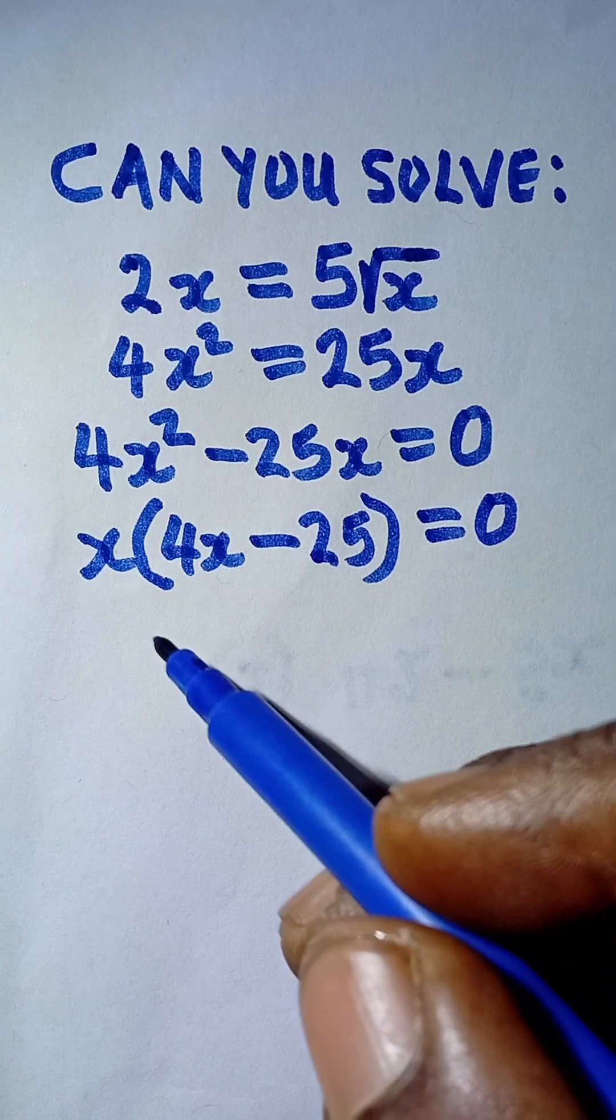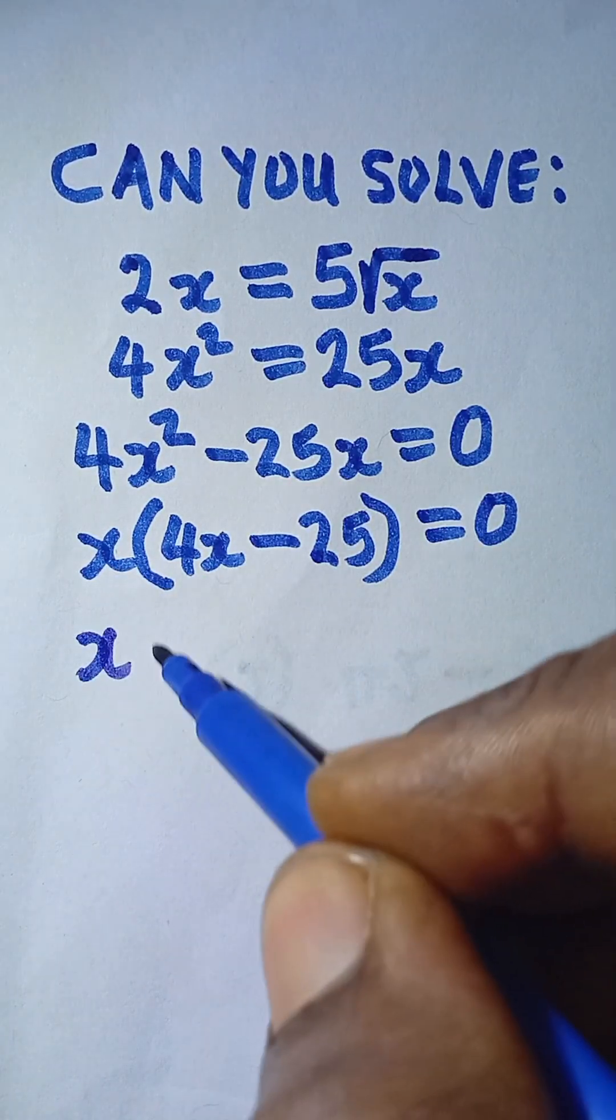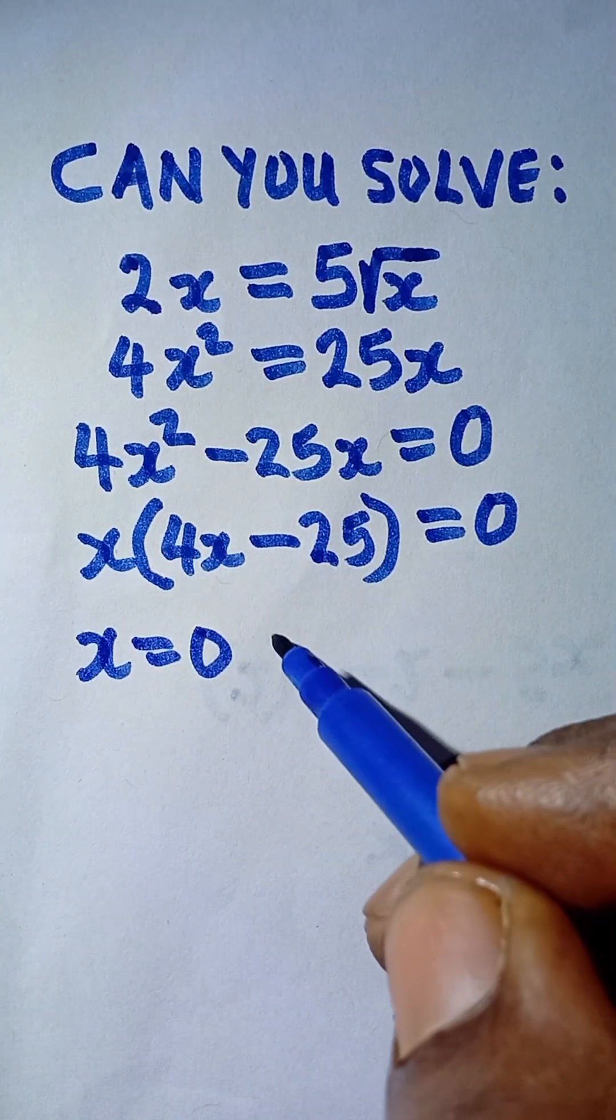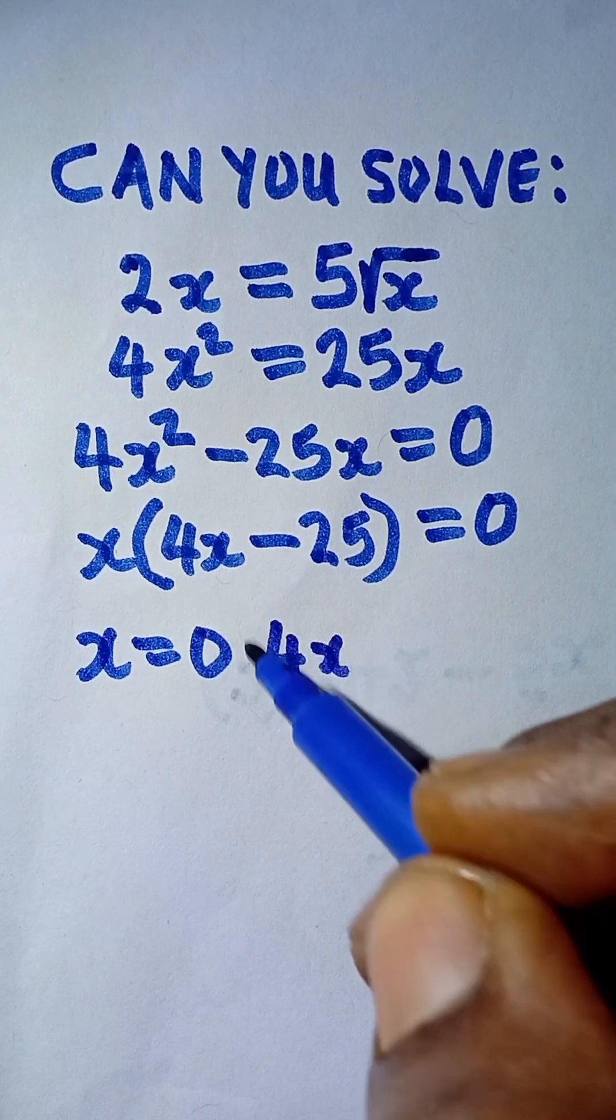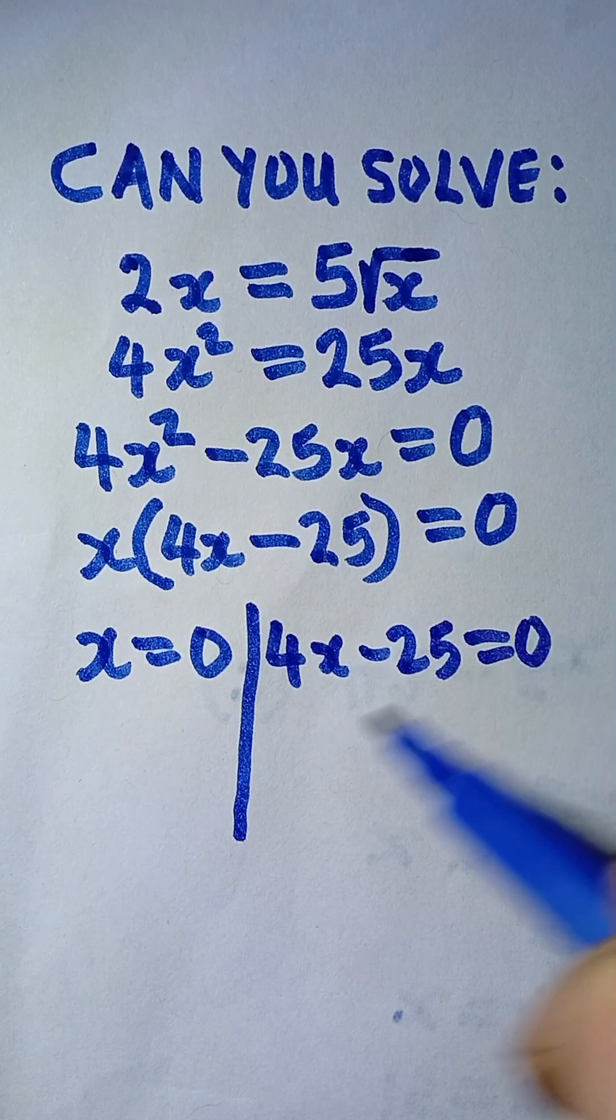Now to solve this quadratic equation as usual, I equate each of the terms to 0. So x first, I equate it to 0. And then this term, which is 4x minus 25, I also equate it to 0.